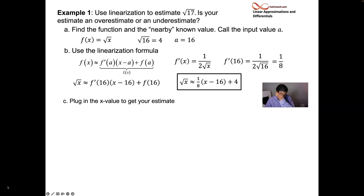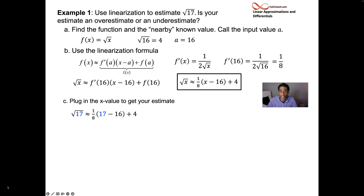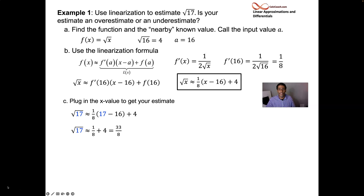Let's plug in the x value we're trying to approximate. We're trying to find the square root of 17, so we plug it into the formula. The square root of 17 is approximately equal to one-eighth times the quantity 17 minus 16, all added to 4. That's one-eighth times 1, which is just one-eighth. So 4 plus one-eighth. Since calculators are forbidden, we write our answer as an improper fraction, and when it's time to check accuracy we can go to a calculator.